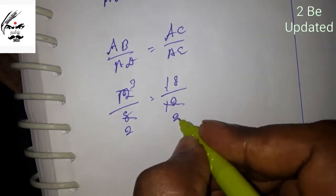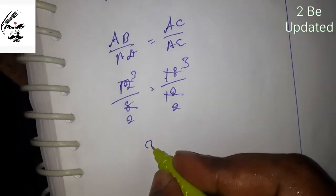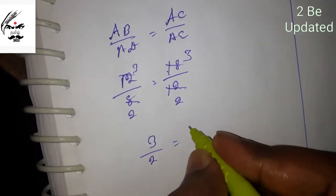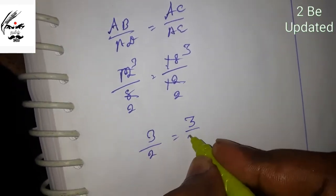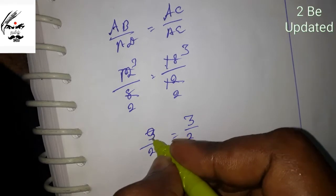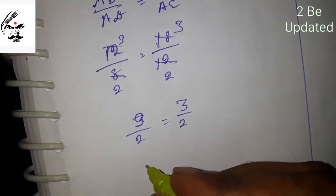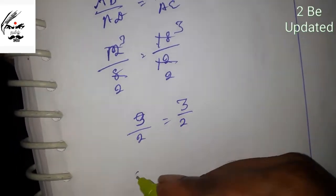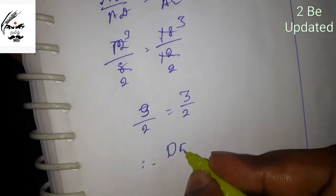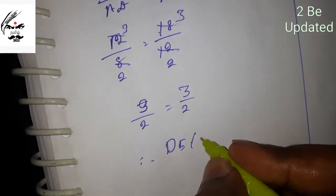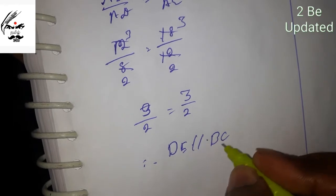3 is equal to 3 by 2, so the ratios are the same. Therefore DE is parallel to BC.